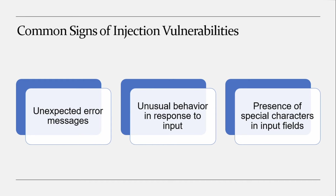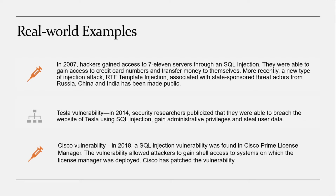Real-world examples of injection vulnerability: In 2007, hackers gained access to 7-Eleven servers through SQL injection and were able to gain access to credit card numbers and transfer money to themselves. More recently, a new type of RTF template injection attack associated with state-sponsored threat actors from Russia, China, and India has been made public. In 2019, several vulnerabilities were found in the popular game Fortnite, including one that left the system at risk of SQL injection attack that could compromise user privacy. This vulnerability was identified and patched before any known exploitation occurred.